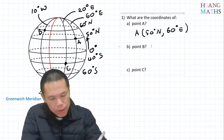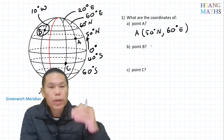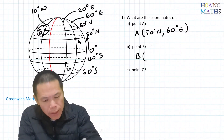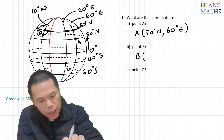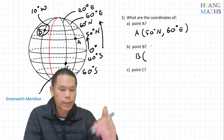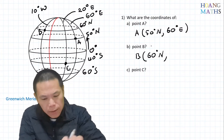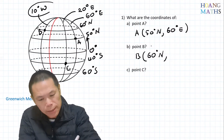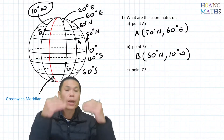For point B, we write latitude first. The latitude is 60 degrees north — it's 60 degrees above the equator. And the longitude here is 10 degrees west. So point B is 60°N, 10°W.